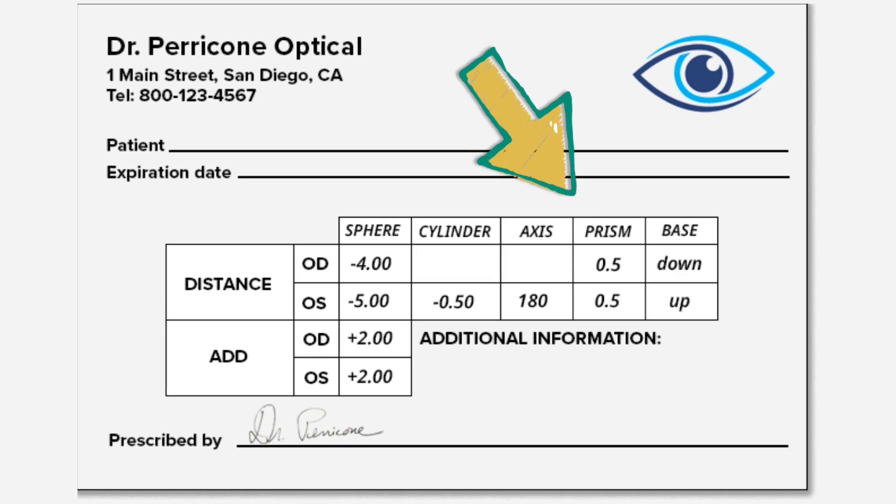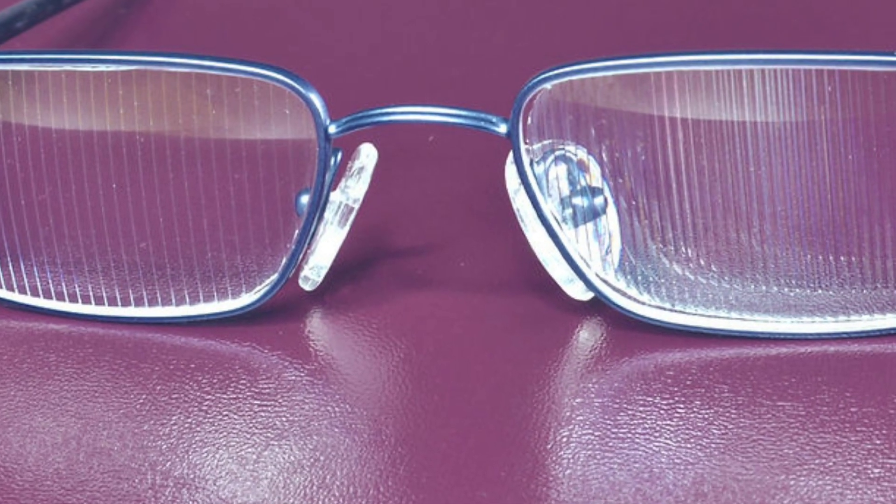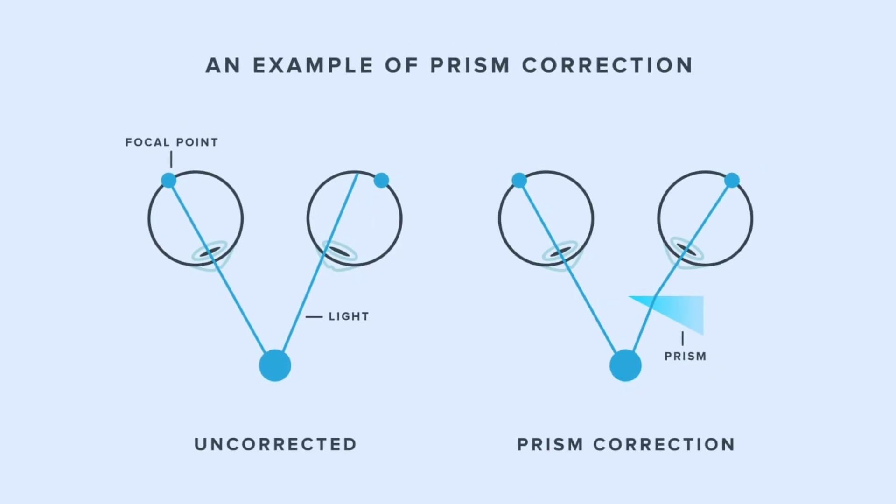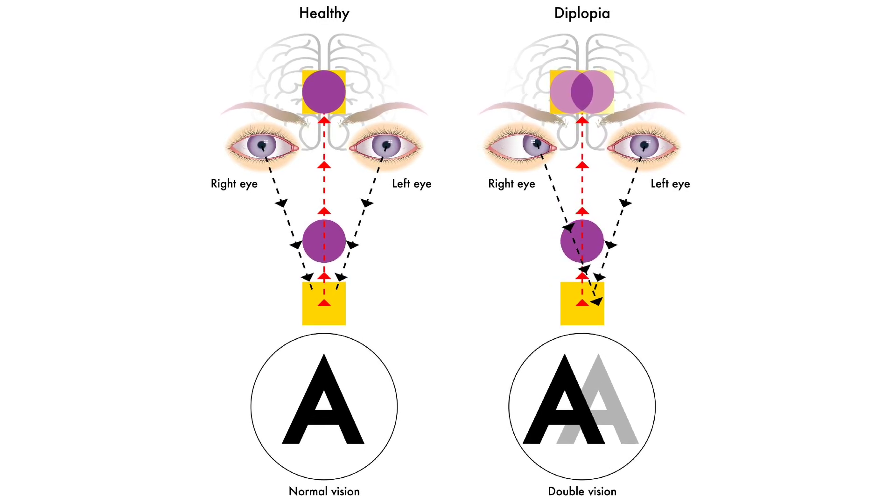If that's the case, you'll want glasses with a prism specification. They have prisms in them that bend light going into one eye, so that it lines up with the image from your other eye.